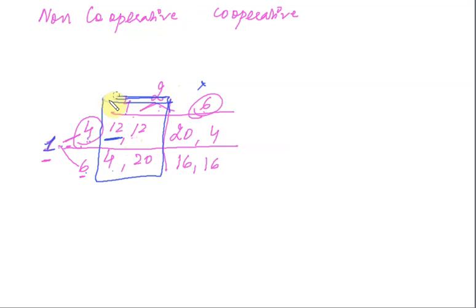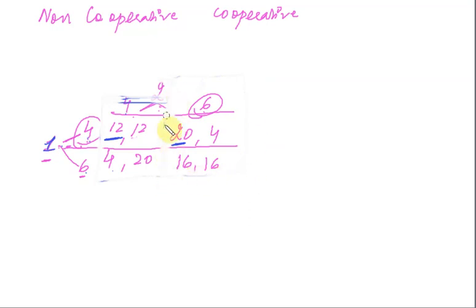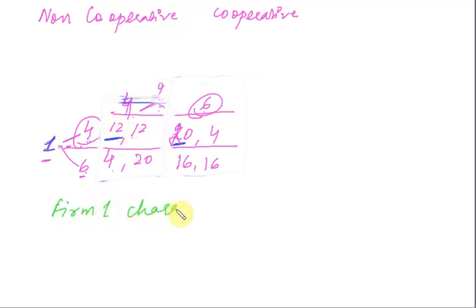Similarly, if you know that firm 2 is charging 6, your choices are: charge 4 and earn 20, or charge 6 and earn 16. You would again charge 4. So irrespective of what firm 2 does, the better option for you is to charge 4. Whether firm 2 charges 4 or 6, your profit is higher when you charge 4. So charging 4 rupees is a dominant strategy for firm 1.